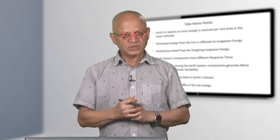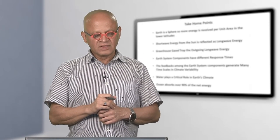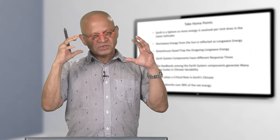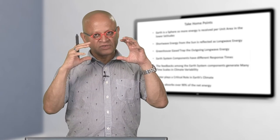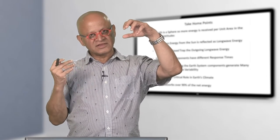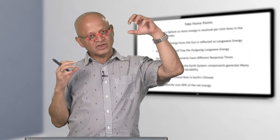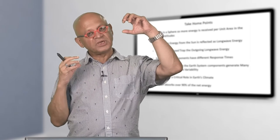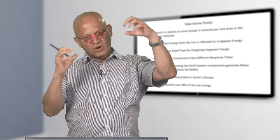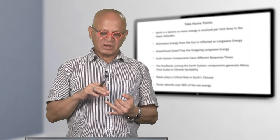In summary: earth is a sphere, so more solar energy is intercepted per unit area at low latitudes and less at high latitudes. When you add ice, snow, and reflectivity, there is a net energy gain at low latitudes and a net energy loss at high latitudes. To keep the poles from getting colder and the low latitudes from getting hotter, we are constantly moving energy from the surplus area to the deficit area — which gives us weather and climate.